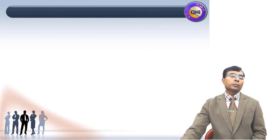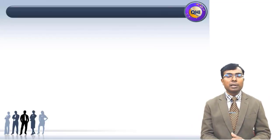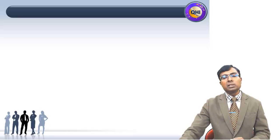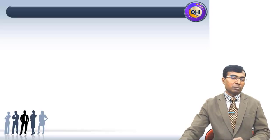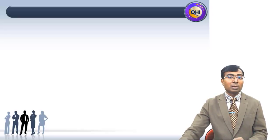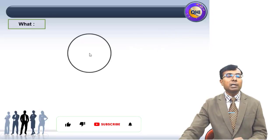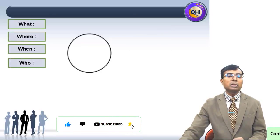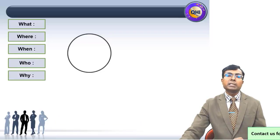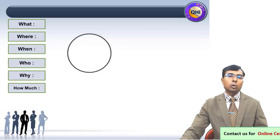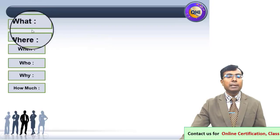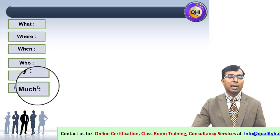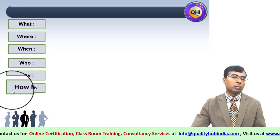Let us start the program now. The methodology we are going to learn in this session is 5W and 1H. What are exactly these 5W and 1H? The first W is What, the second is Where, the third is When, the fourth is Who, the fifth is Why, and then How Much. There are basically five words each starting with W, and that's why it is called 5W and 1H — where 1H stands for How Much.